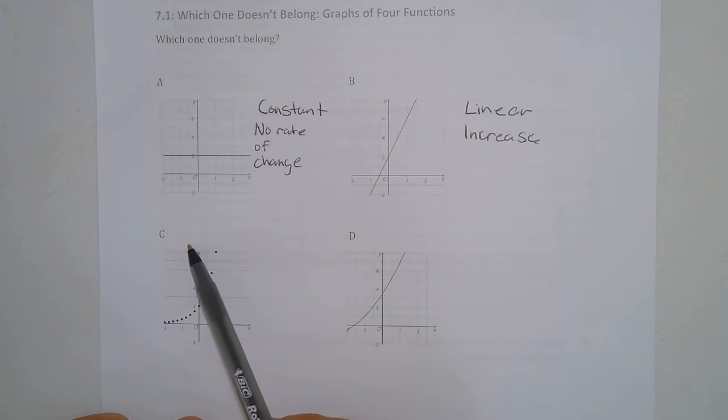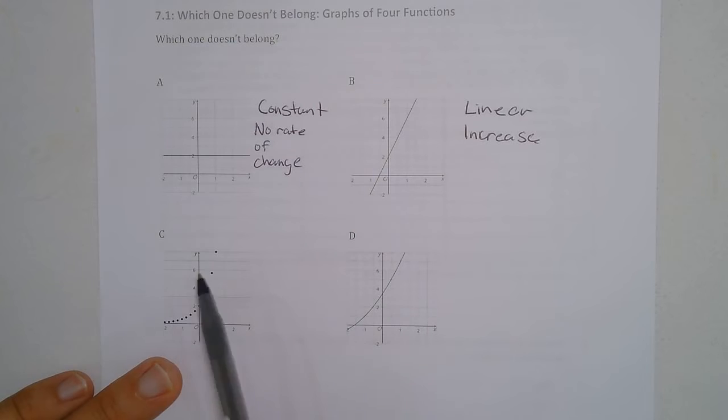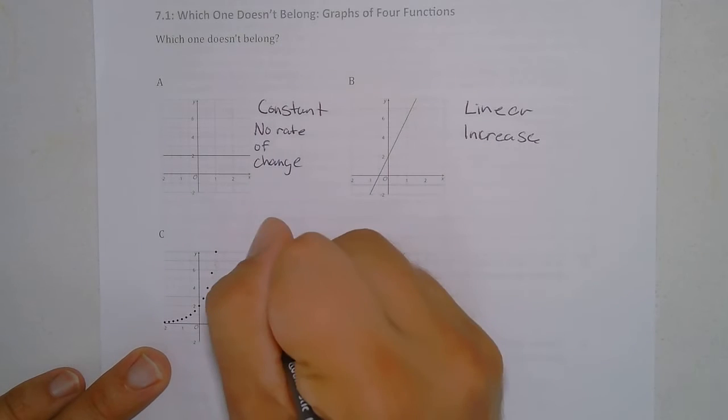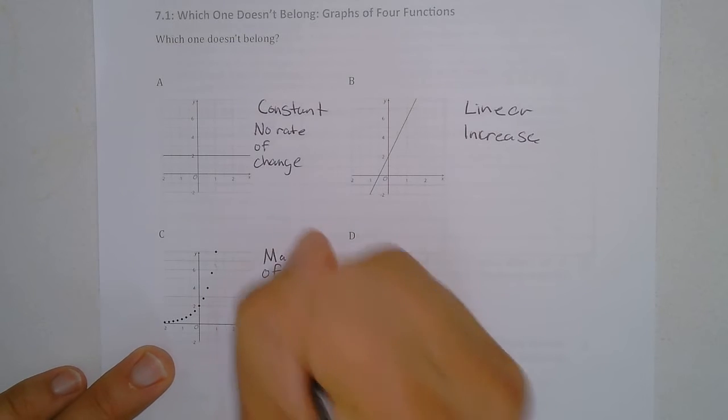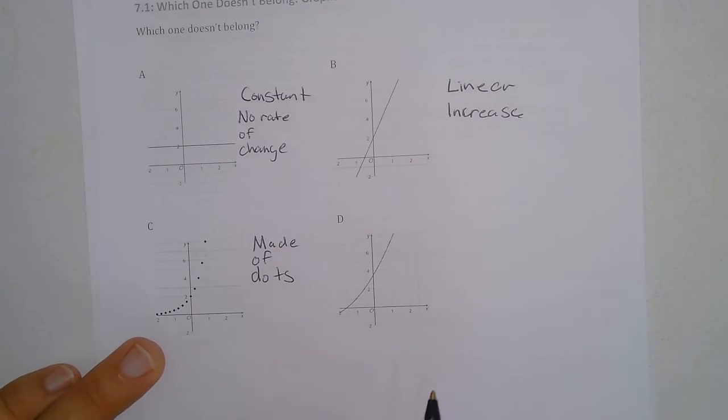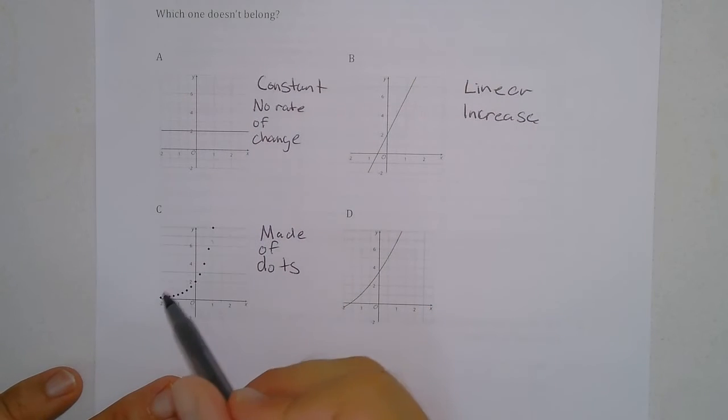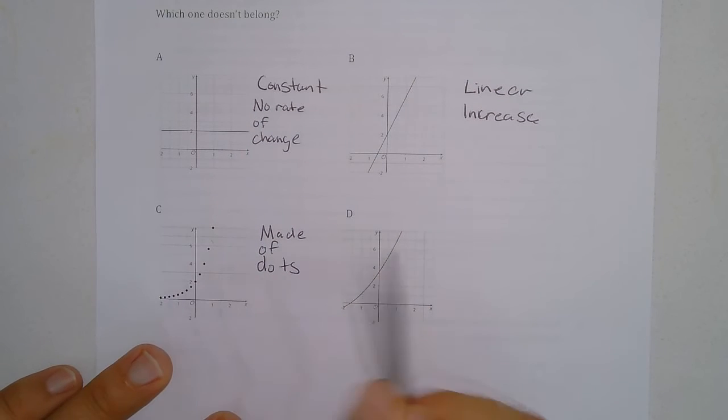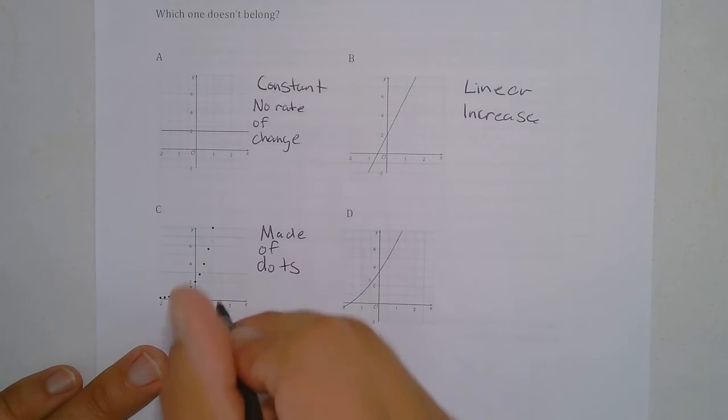And then here in graph C and D, both of these are curves. They could be part of a parabola or exponential, we're not sure. But if I look at this graph, it's made of dots, and we call that when a graph is made of dots, it's not continuous like these three, it is discrete.